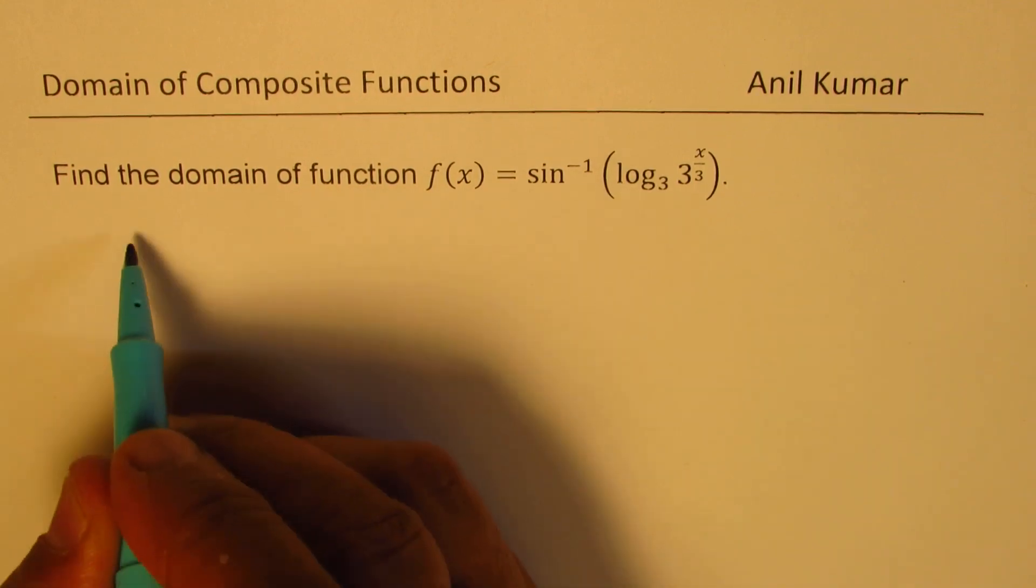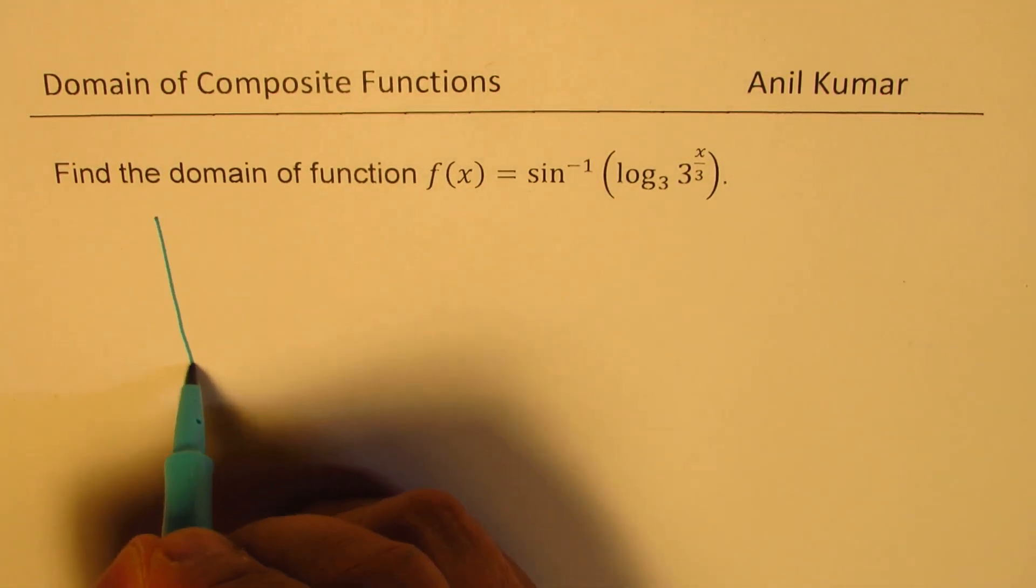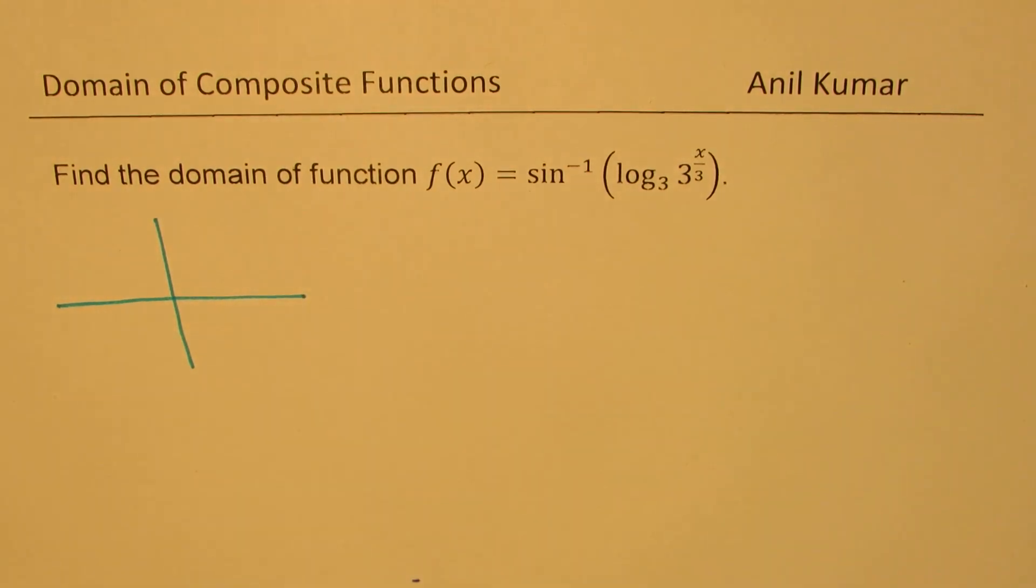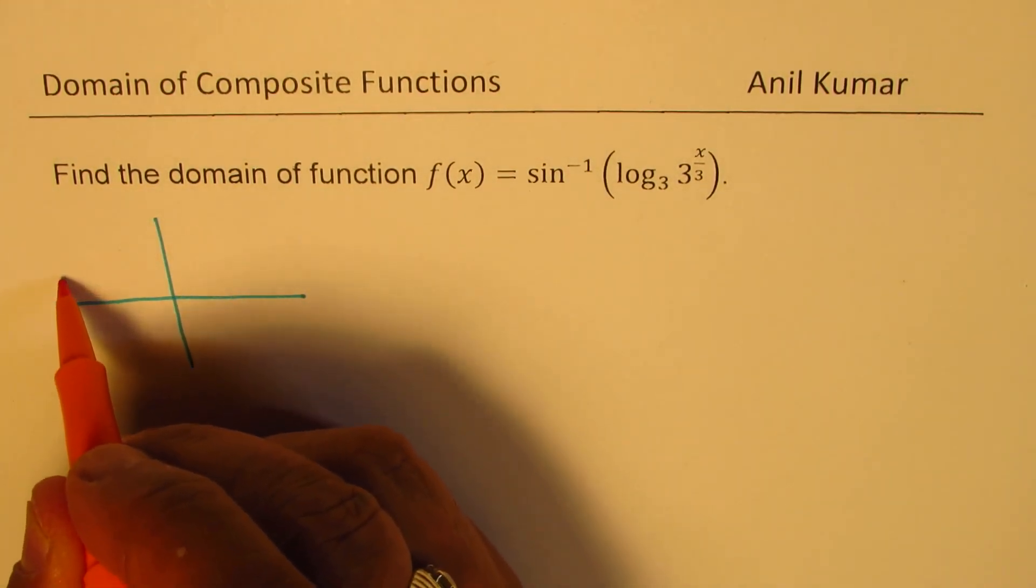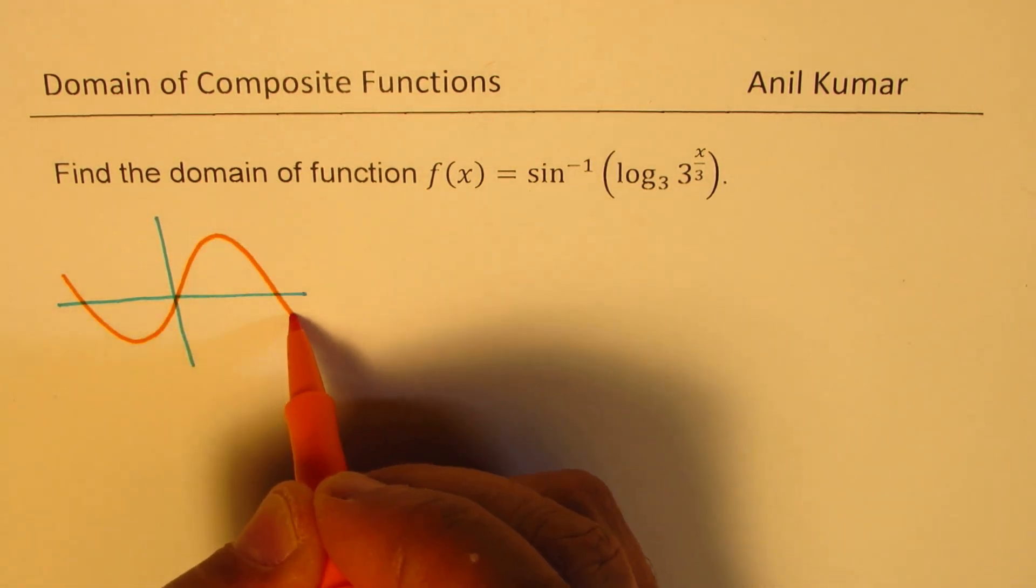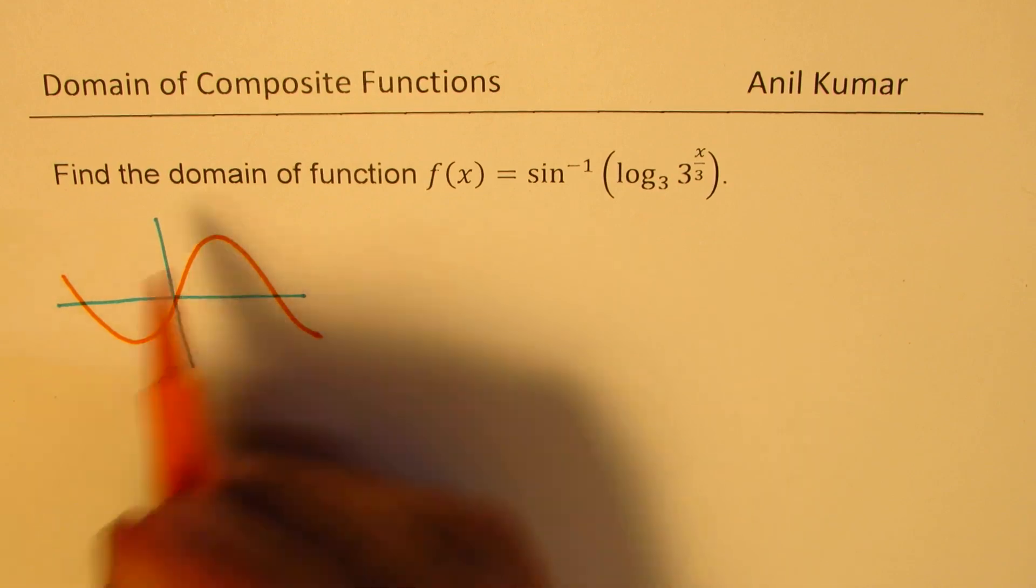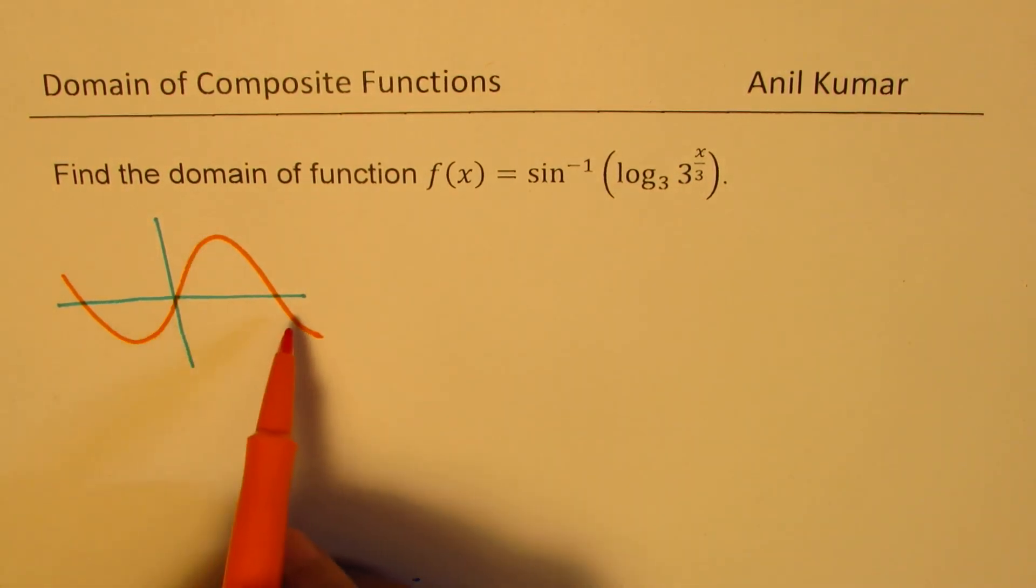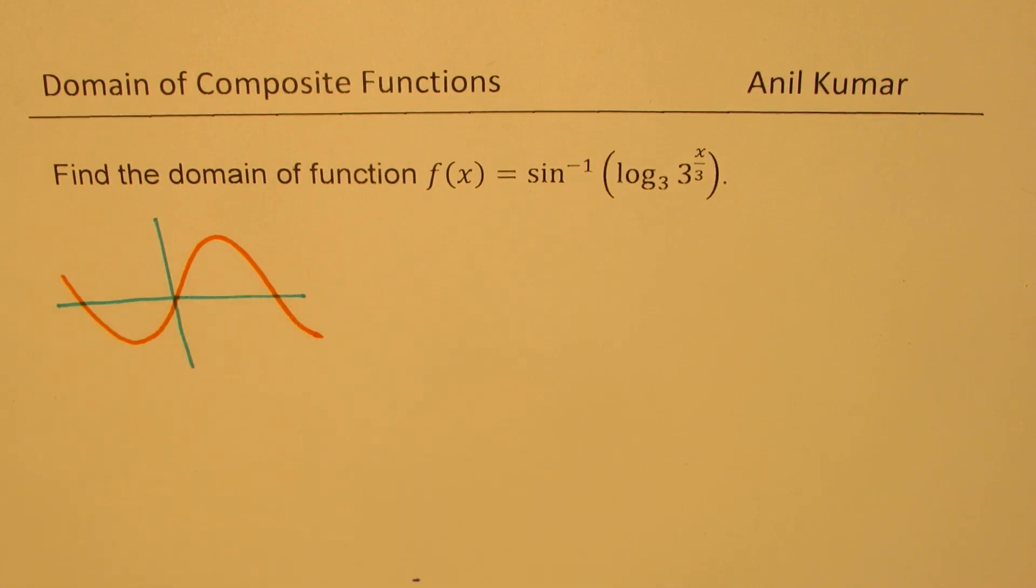Now let's first talk about the inverse function and then we'll get into the details. The graph of sine function is kind of like this. Now you will notice that this graph fails the horizontal line test and therefore its inverse cannot be a function.